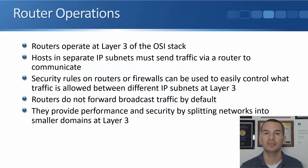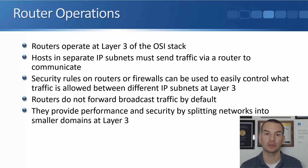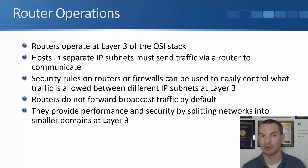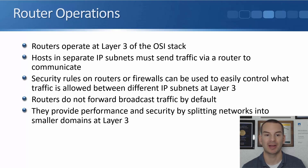In this lecture, you'll learn about why we have VLANs. Virtual local area networks are a layer 2 feature which are implemented on our switches. And to understand why we have them, you need to understand the problem that they solve first. Routers operate at layer 3 of the OSI stack. Hosts in separate IP subnets must send traffic via a router to communicate — that's a router's main job, routing traffic between different IP subnets.